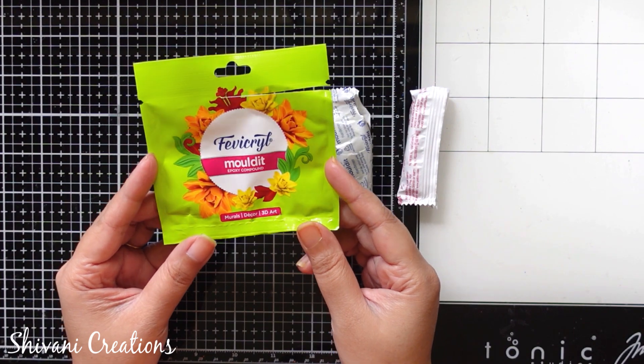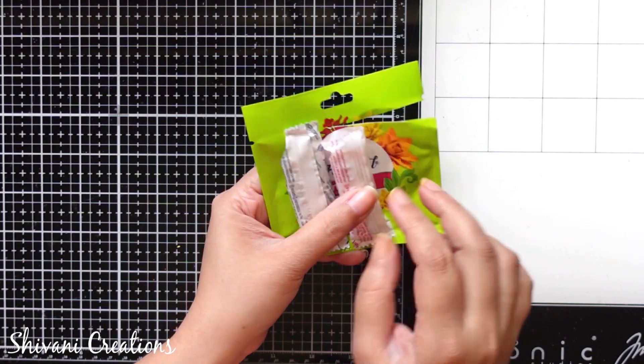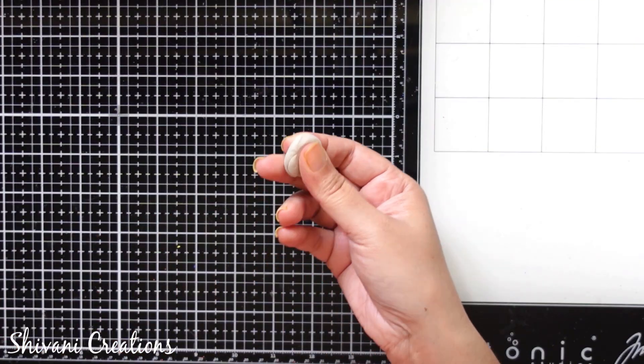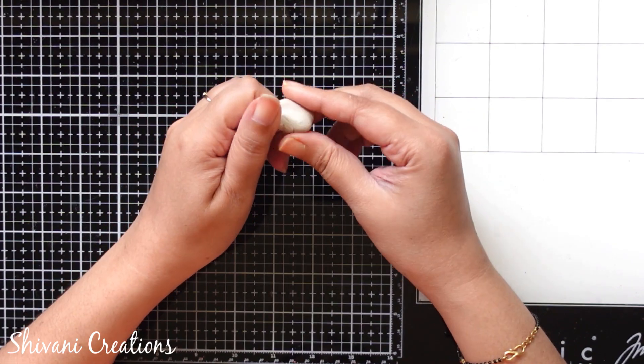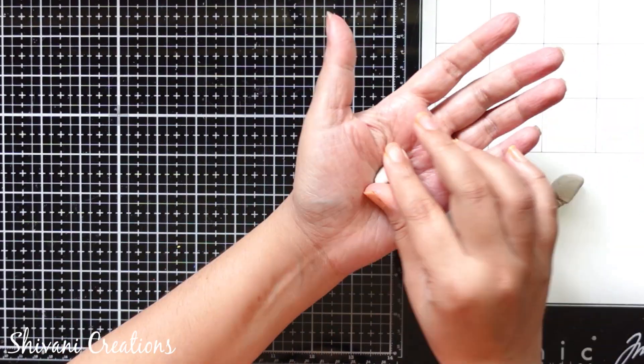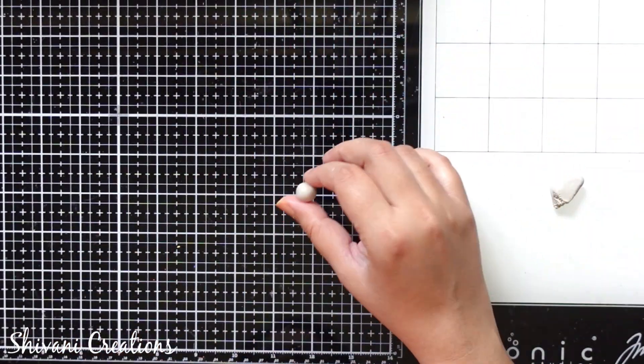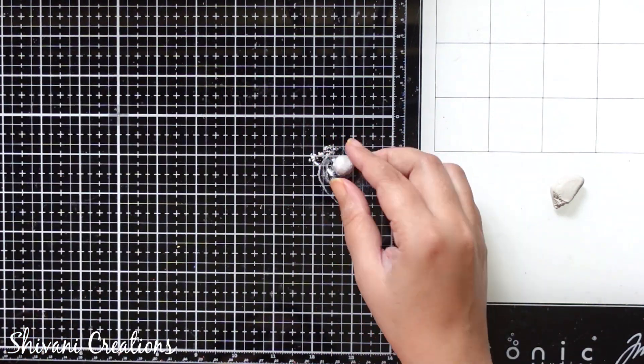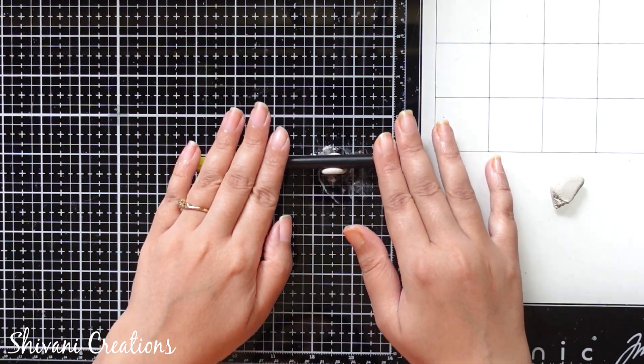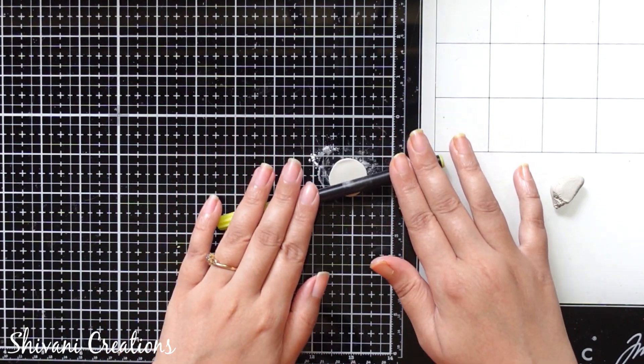Here I am taking molded clay by Favicryl, in which you get hardener and resin mixture. So you have to take both the clays in equal quantity and mix it very well till it gets white color. So I have already prepared a little bit of clay. Now I am taking one small dough and rolling it on my palm. Then take a little talcum powder on the surface and make a small chapati using any pen or roller.